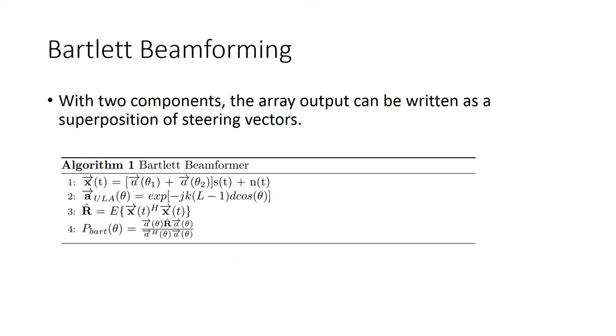After summing the two messages and determining the array output X, the covariance matrix R can be determined with the array outputs Hermitian transpose, denoted as H. Performing the calculation in step 4 over various arrival angles will provide the spatial spectrum estimate.